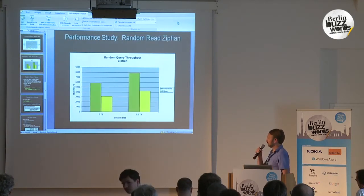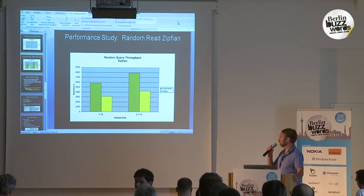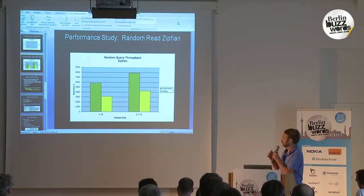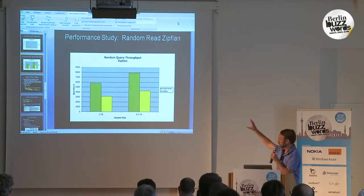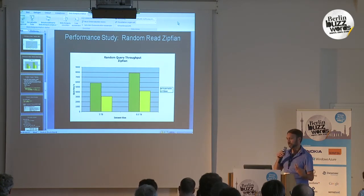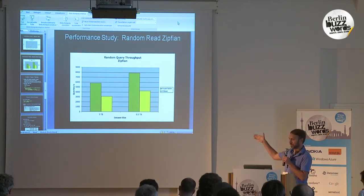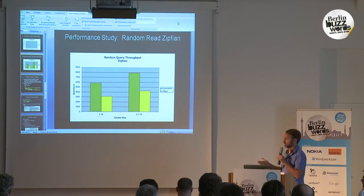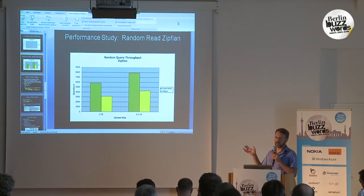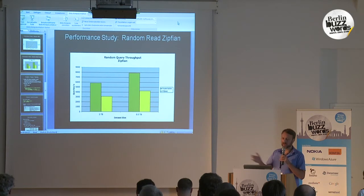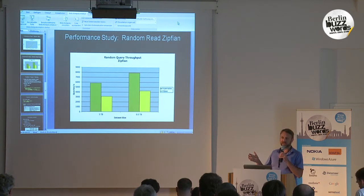These are the results for the random read workload following a Zipfian distribution. We ran the test on two dataset sizes: five terabytes and half a terabyte. In both situations, Hypertable was about twice as fast. The main reason is that Hypertable has a query cache; HBase doesn't, or didn't at the time. This will ultimately be compelling because it allows you to deliver the same scalable database capacity on a much smaller set of hardware.